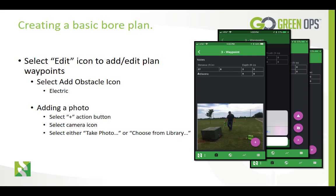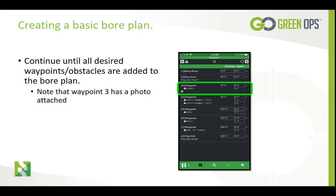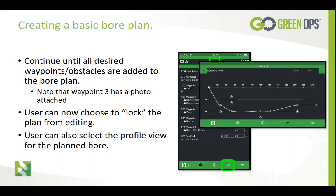Photos are not uploaded to the Commander 7 or integrated displays, therefore they are only viewable in FieldScout. Continue until all desired waypoints and obstacles are added to the board plan. You'll note that waypoint 3 has a photo attached — that's the little icon at the bottom left side of the screenshot. The user can now choose to lock the plan from editing by tapping on the padlock, which will prevent any accidental changes to the plan. To unlock, simply tap the padlock again and confirm that you want the plan unlocked. You can now select the profile view icon to view the planned board with obstacles. You may want to rotate your mobile device to the landscape position for a better view.